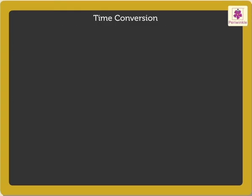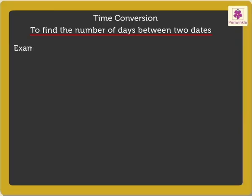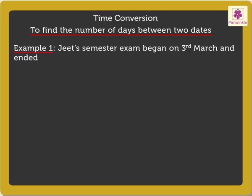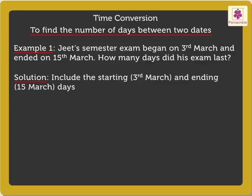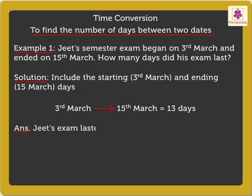Next, let us look at a few examples to learn how to find the number of days between two dates. As there are papers on both the start and end dates, we will include them too while we count the number of days. We count forward from 3rd March till we reach 15th March, which gives us 13 days. Hence, we can say that Jeet's exam lasted for 13 days.